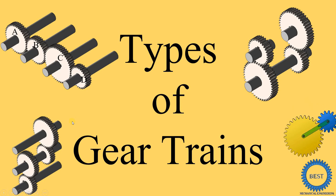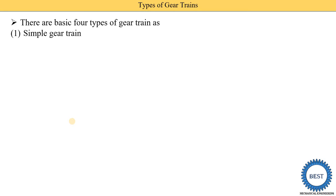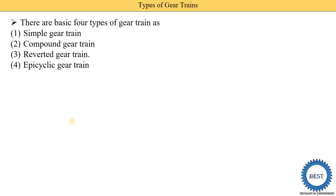In this video, I explain the types of gear train. There are basically four types of gear train available: the first one is simple gear train, second is compound gear train, third is reverted gear train, and fourth is epicyclic gear train. Now we will understand all the types of gear train in detail.